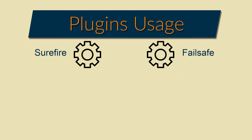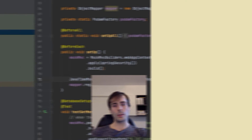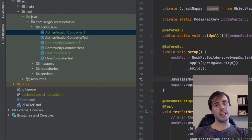There are two Maven goals: test and integration-test. The Surefire plugin will be scoped to the test goal — this is already the default behavior. And for the Failsafe plugin, I must scope it to the integration-test goal. Let's open and edit the POM XML to configure those plugins.